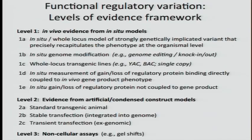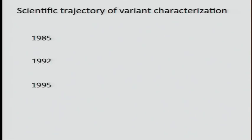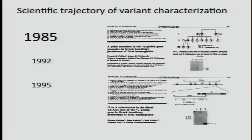With level 1A, there are very few examples. The most famous regulatory variant, and the very first one discovered, relates to a trait called hereditary persistence of fetal hemoglobin. Normally you have globin switching—fetal hemoglobin turns off around the time of birth. But some individuals have a bunch of fetal hemoglobin that didn't shut off. The scientific trajectory started in 1985—here Francis Collins as first author—with the discovery, based on genetic evidence, of a variant segregating in a family that landed in the binding site of a transcription factor. Two papers appeared based purely on sequence evidence reporting this variant was correlated with the trait.